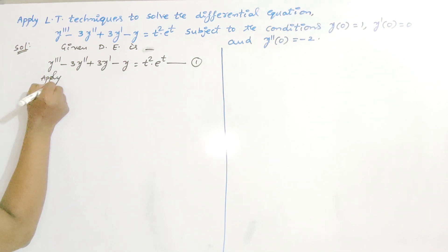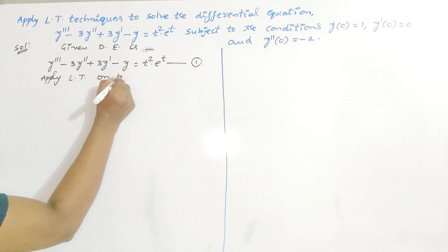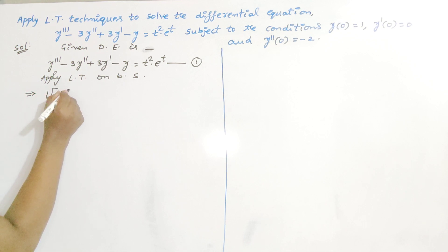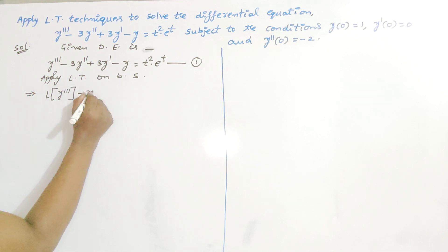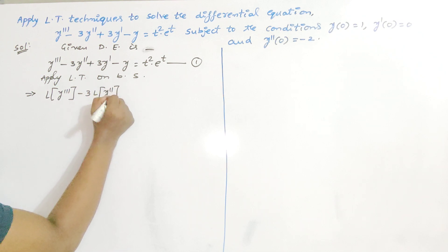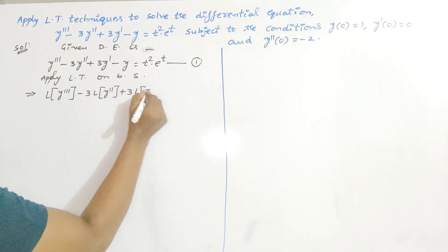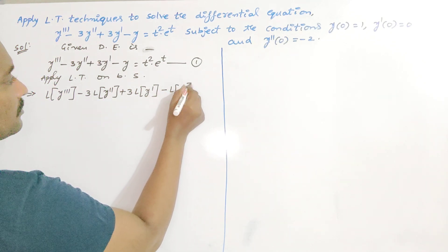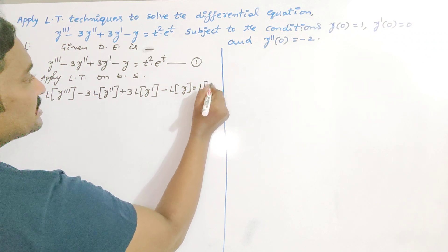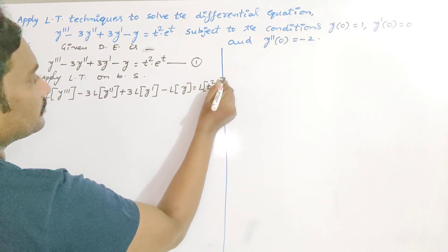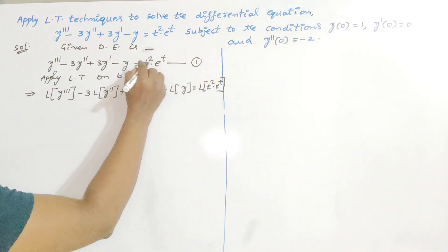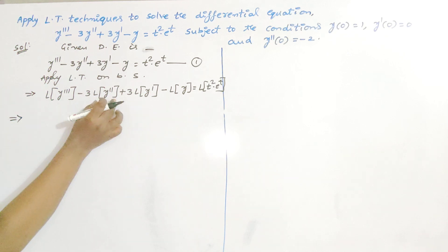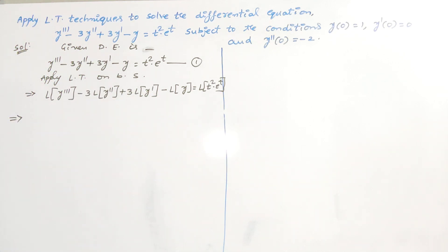Apply Laplace transform on both sides. You will get L{y'''} minus 3 times L{y''} plus 3 times L{y'} minus L{y} — separating the terms using the linear property — equal to L{t squared times e to the power t}, which is the right-side function. We have to write the formula for L{y'''}, L{y''}, and L{y'} carefully.